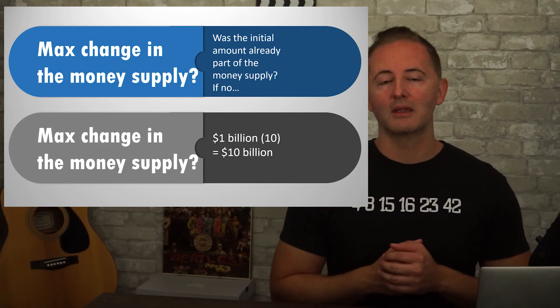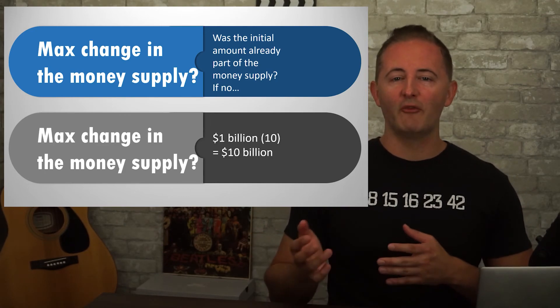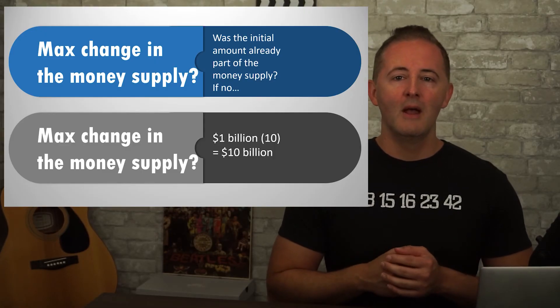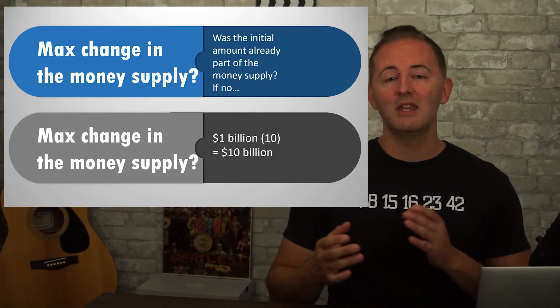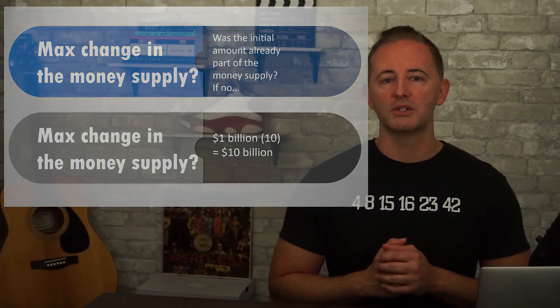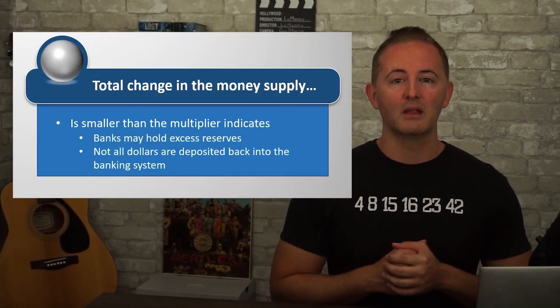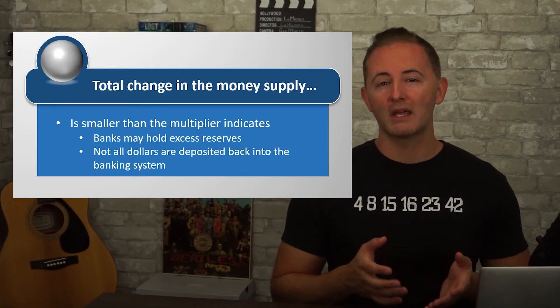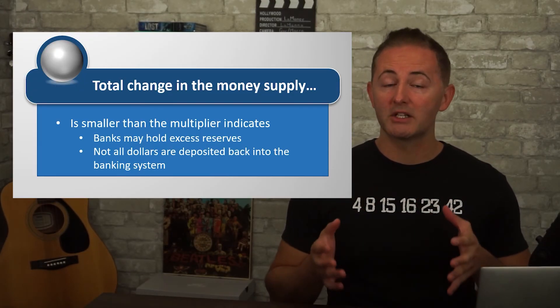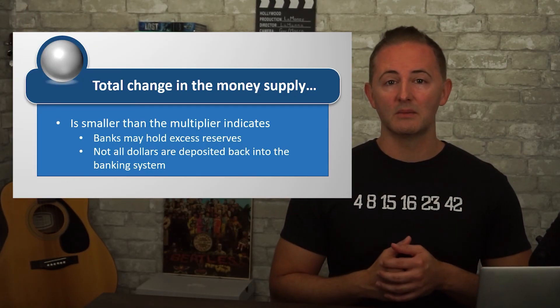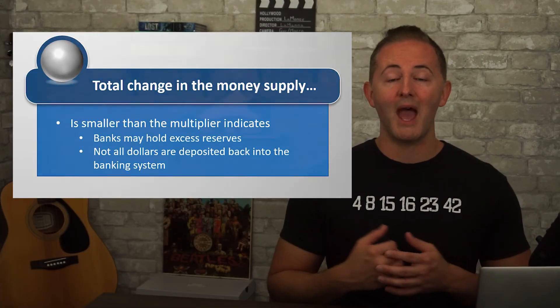In reality, the total change in the money supply is smaller than what we calculate, mainly because banks may hold excess reserves — which is especially true today — and not all dollars will be deposited back into the banking system since some people will want to hold cash. I know I threw a lot at you, so stick with it. Practice. You got this.